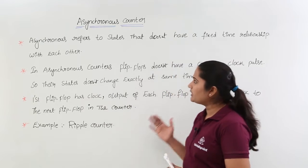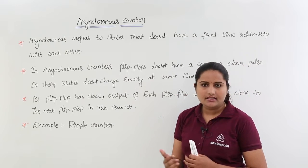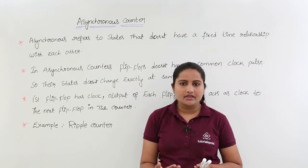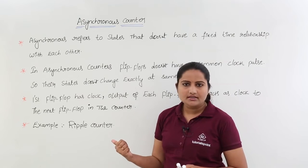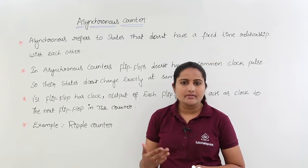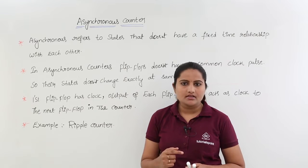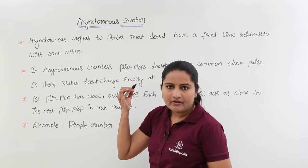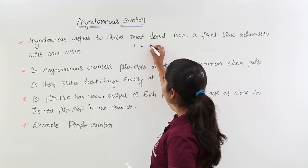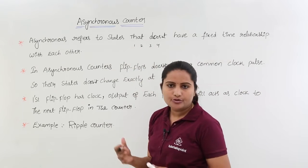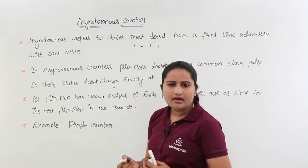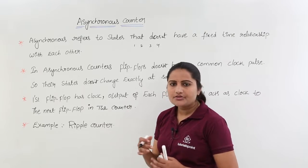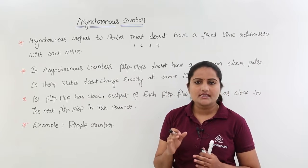See the important points for asynchronous counters. Asynchronous refers to states that do not have a fixed time relationship. For an n-bit counter you may have 2 power n states. Each state in an asynchronous counter cannot have a fixed time relationship — for example, if you have 4 states for a 2-bit counter, one state may occur at 5 minutes, the next at 4 minutes, the next at 3 minutes, and so on.